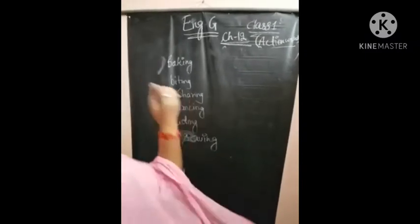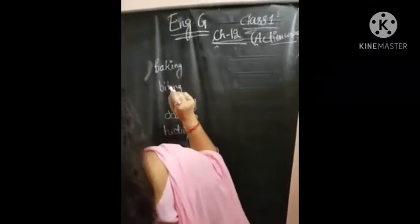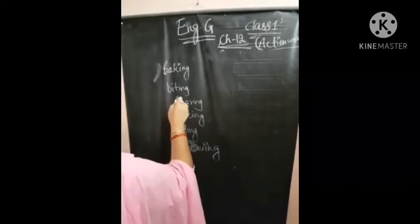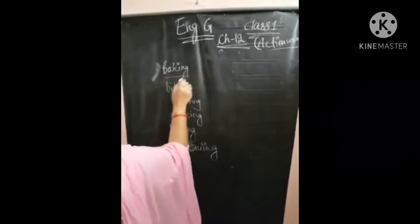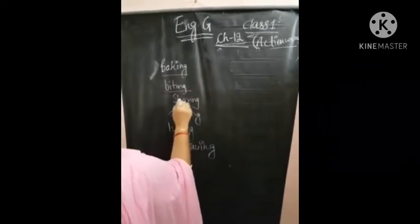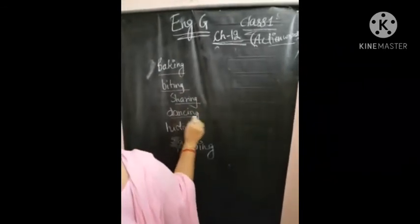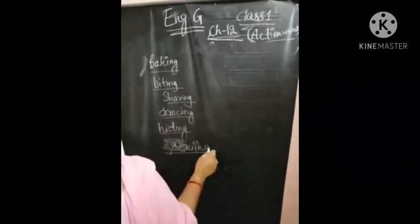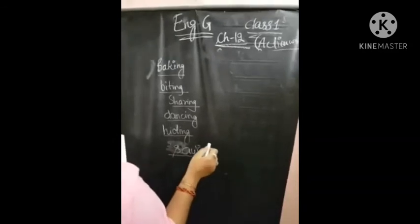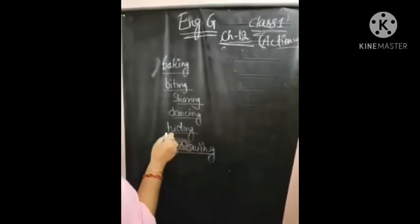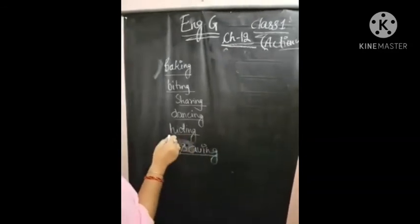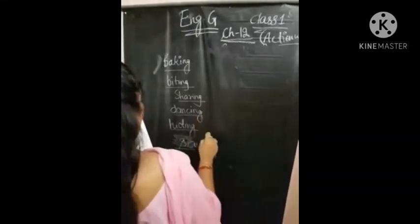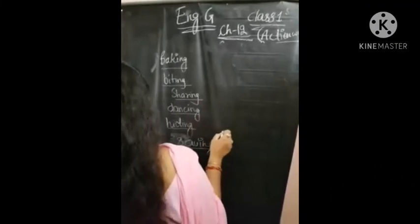Here are more examples of doing words: baking, biting, sharing, dancing, hiding, and saving. I am going to use these words in sentences.